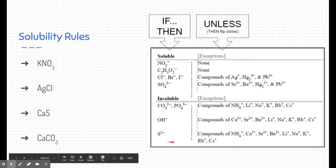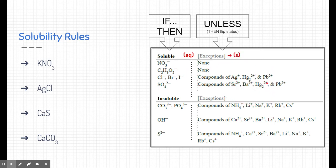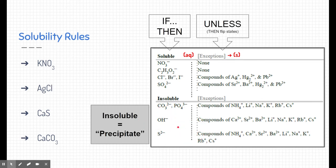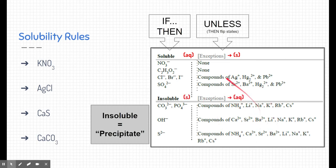The chart works like if-then rules. Starting at the top: if we see certain substances, they will likely form something soluble — meaning aqueous. However, there are some exceptions. If those substances are attached to any of the listed exceptions, then the rule flips and they become insoluble. Conversely, at the bottom of the chart, if you see certain substances they're insoluble — forming a precipitate — unless attached to one of the exceptions, in which case they are soluble or aqueous.